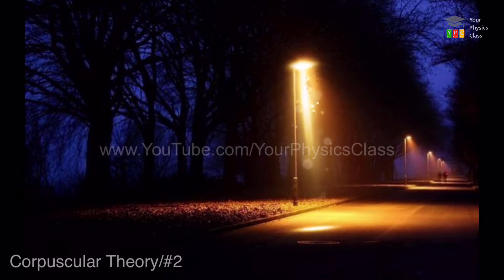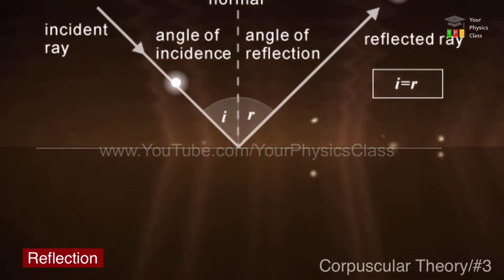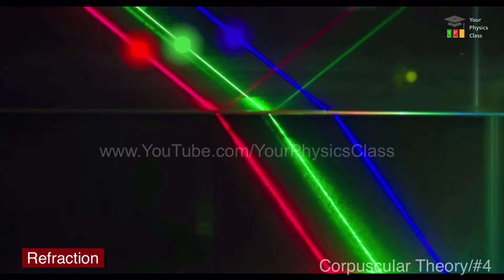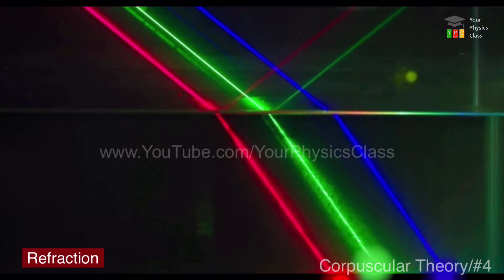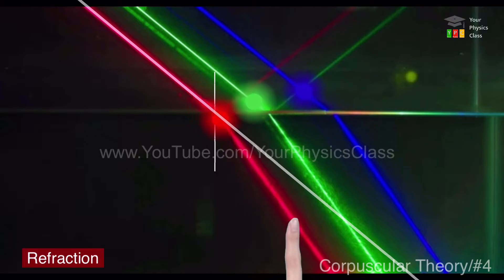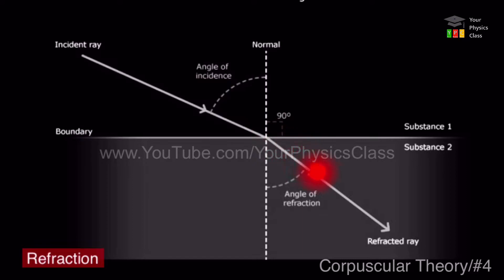When light corpuscular strikes reflecting surface, they undergo elastic collision and hence follows laws of reflection. During refraction, it is the difference in attractive forces between the corpuscular and particles of the medium that causes a change in direction of the corpuscular. When light passes from one medium to another medium, there is a change in its direction.